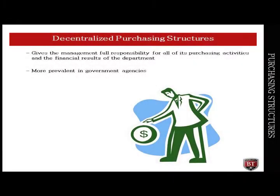The first structure is a decentralized purchasing structure. This type of purchasing structure gives the management of the business unit full responsibility for all of the purchasing activities and the financial results of the department. Decentralized purchasing is more prevalent in government agencies. The purchasing professionals employed by government agencies have an even greater responsibility in decentralizing purchasing structures — they have a moral responsibility to spend taxpayers' money with high regard to spending it effectively.